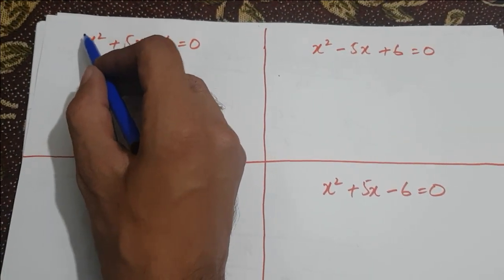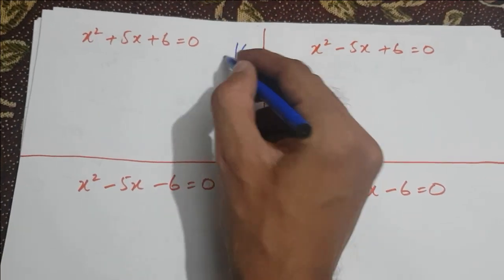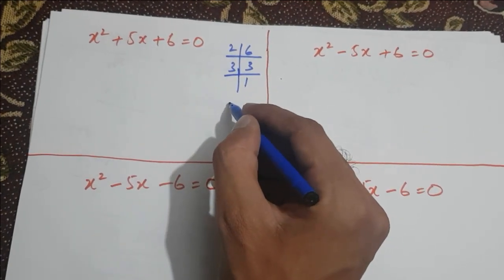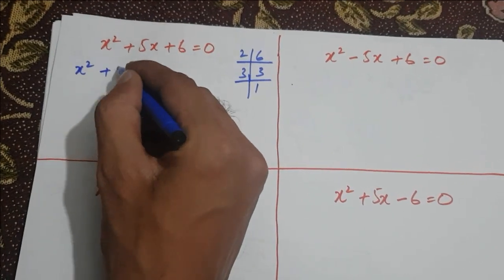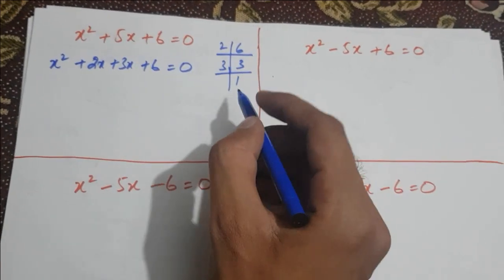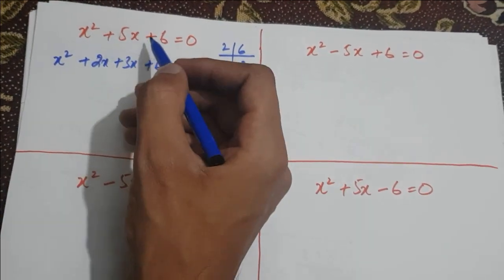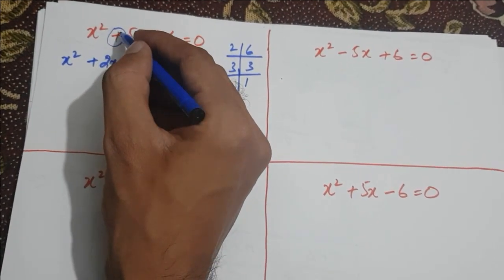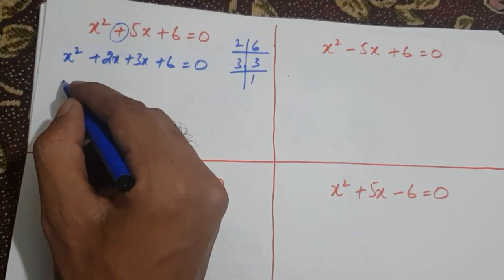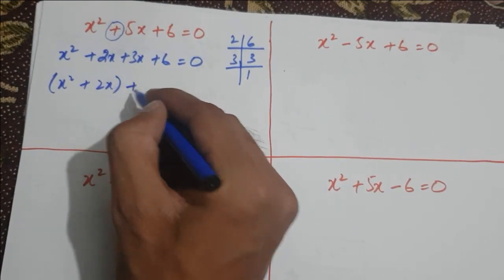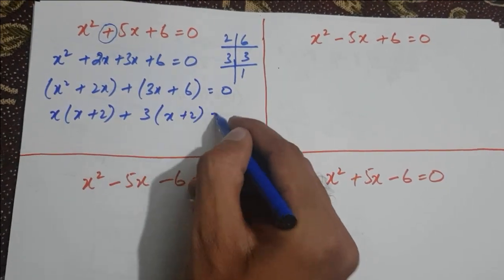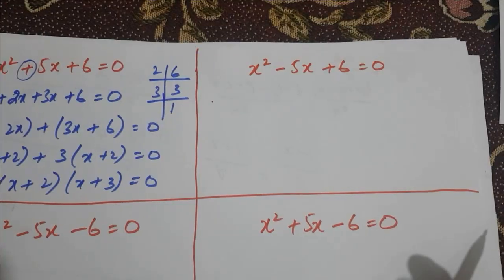First, we see the coefficient of x² is 1 and the constant is +6. We factorize 6 and get 2 times 3. The possible factors are 2 × 3. Since the product is positive, both factors have the same sign. The middle term is positive, so both factors are positive — we use +2 and +3. We write x² + 2x + 3x + 6 = 0, factor to get x(x + 2) + 3(x + 2) = 0, giving us (x + 2)(x + 3) = 0.